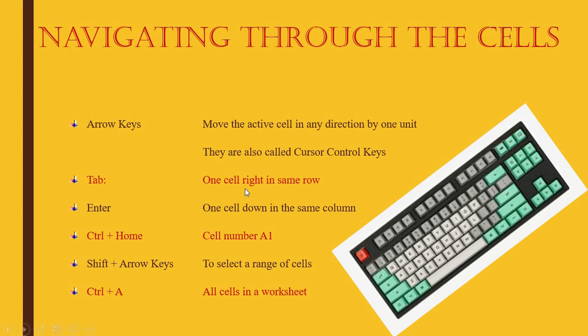You can use Tab — if you press Tab you can go one cell to the right. If you press Enter you can go down one cell. If you press Ctrl+Home you can come to cell A1, the very beginning. If you have gone far away and forgotten what is at the beginning, press Ctrl+Home to come back. Shift plus arrow keys lets you move and select a range of cells. Ctrl+A selects all cells in the worksheet together.